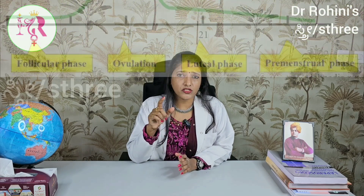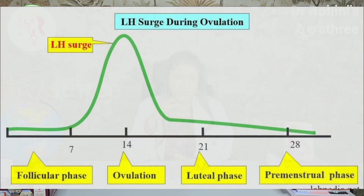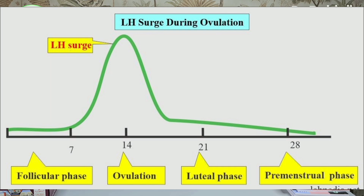As I mentioned in my previous videos about the normal menstrual cycle, in a normal menstrual cycle on day 14 of the cycle, there is a sudden increase or surge in the levels of LH hormone — that is luteinizing hormone — and then that hormone drops. This is called the LH surge, and when there is an LH surge, that is the time when the egg gets released. This happens in a normal menstrual cycle where all the hormones are balanced.